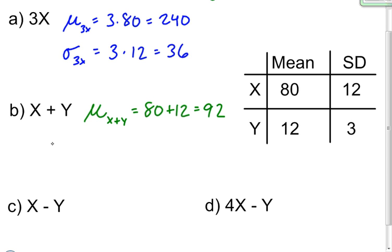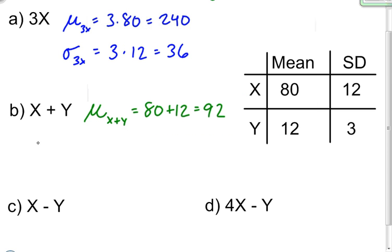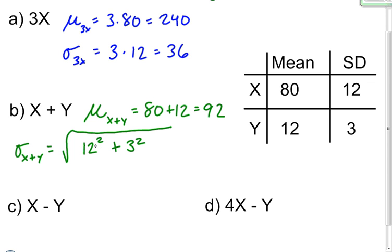Now the standard deviation is different. You cannot just take the standard deviation for random variable x and for y and add the two together. What you have to do is find the variance of both, add the variances together, and then take the square root to get back to the standard deviation. So the standard deviation of x plus y is the square root of 12 squared plus 3 squared. 12 squared is the variance for x and 3 squared is the variance for y. When you do the math you end up getting 12.37.